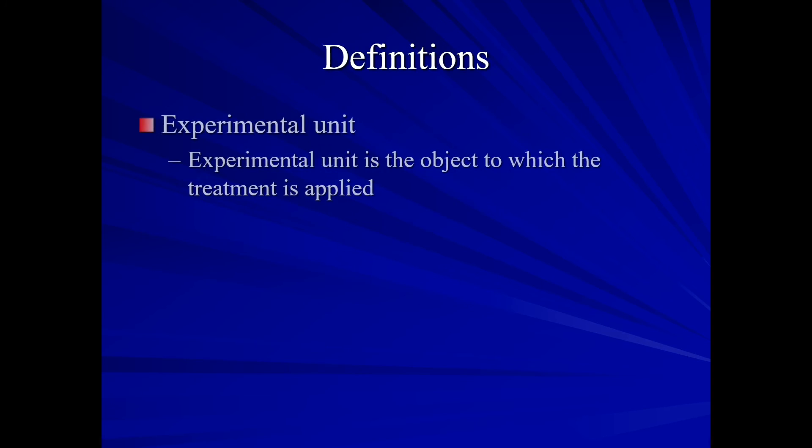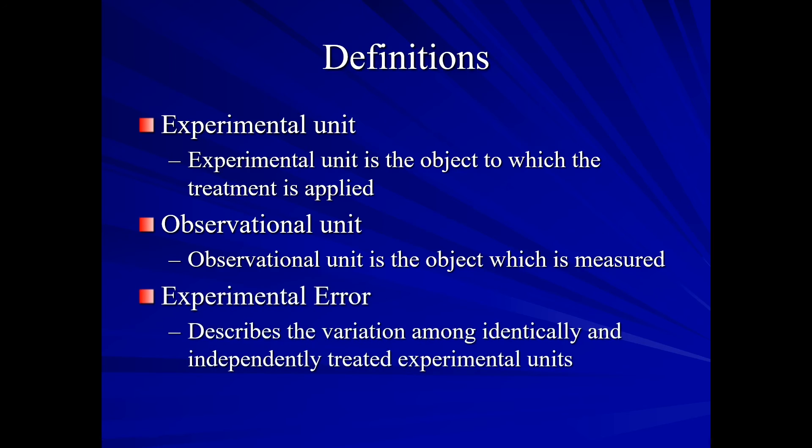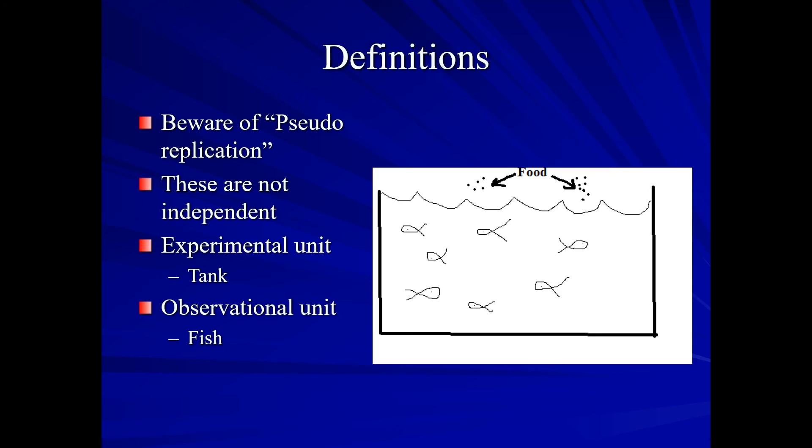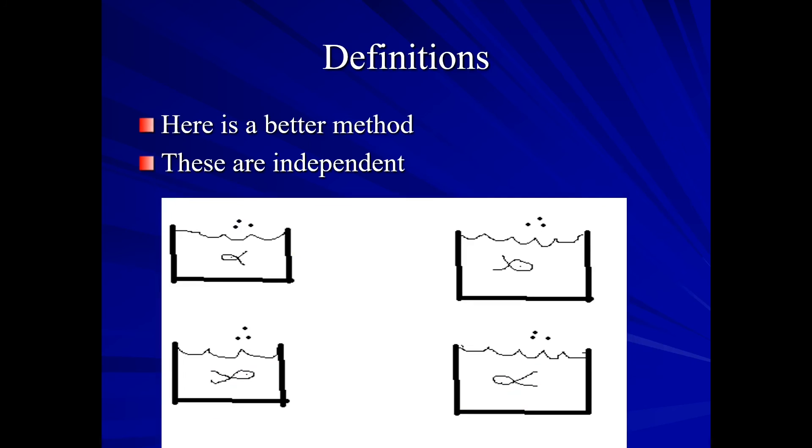Now our experimental unit. We discussed this a few minutes ago. This is the object to which our treatment is applied. Our observational unit. This is the object which is measured. So in the case of our corn growth it might be the total yield in tons for the season. Our experimental error. This describes variation among identically and independently treated experimental units. One thing we need to be aware of is what's called pseudo-replication. So perhaps we are looking at determining how a certain type of food impacts fish growth. Well in this case we have all our fish in our tank. However these are not independent because our experimental unit is our tank but our observational unit is our fish. So a better method would be to have each fish in its own individual tank. Therefore our experimental unit and our observational unit are the same.